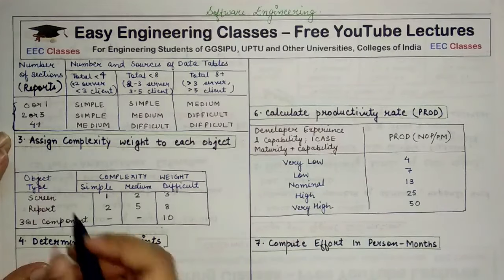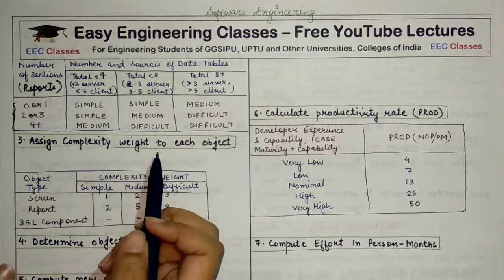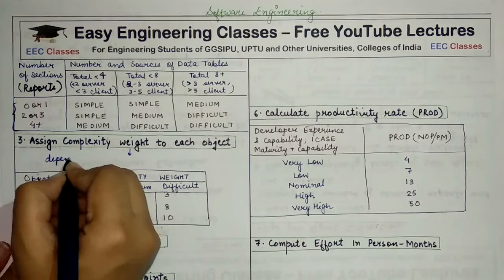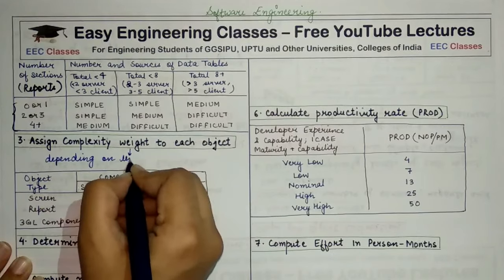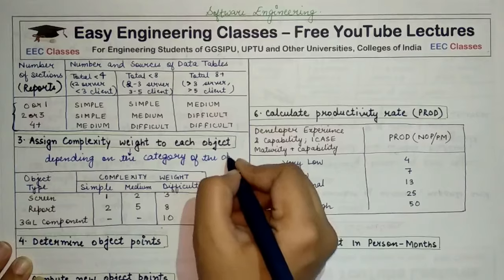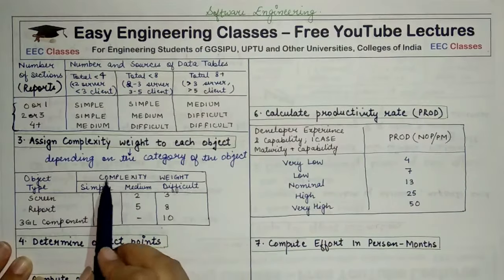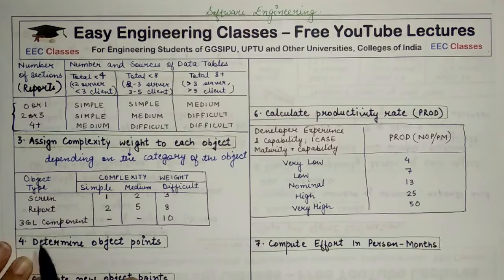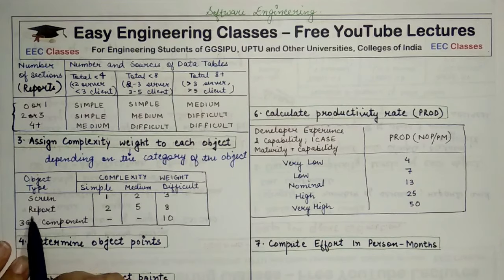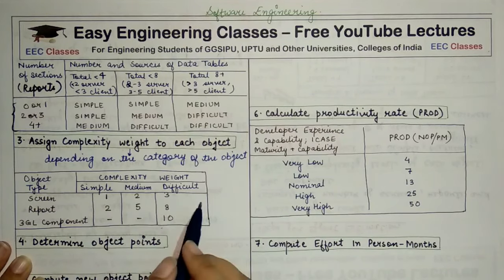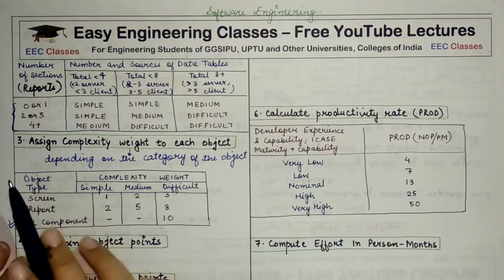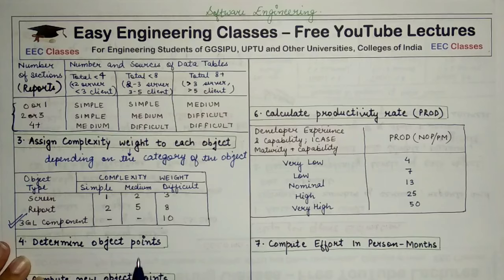Once you have picked the category, you assign a complexity weight to each object depending on the category assigned. For example, if a screen is simple, the complexity weight is 1. If a report falls in the difficult category, the weight will be 8, and so on. One important thing to remember: 3GL components are always classified in the difficult category — there is no separate classification table for them, and we always assign their complexity weight as 10.